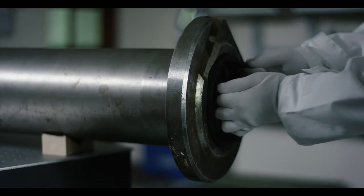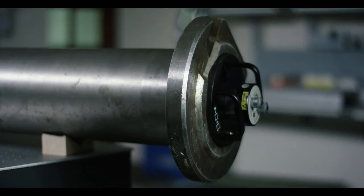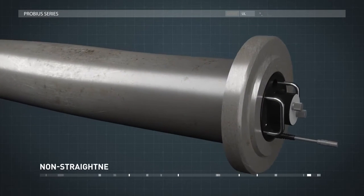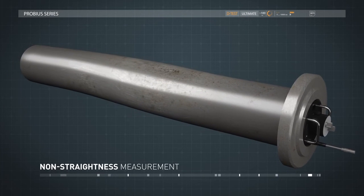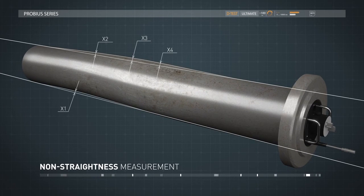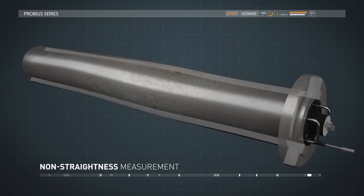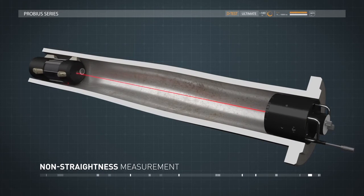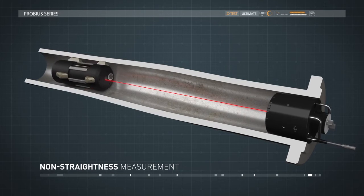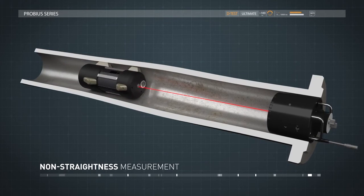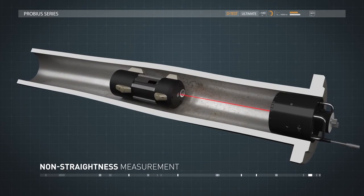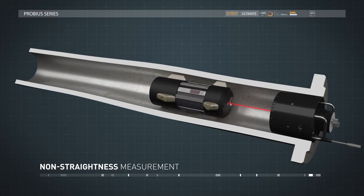To measure non-straightness, you insert the laser emitter from one side of the measured object and ProBius from the other side. The laser emitter creates a very stable base axis inside the object and copies the shape of the profile when it moves inside the object. The photosensor detects the position of the laser beam while software calculates the real-time deviation from the base axis.